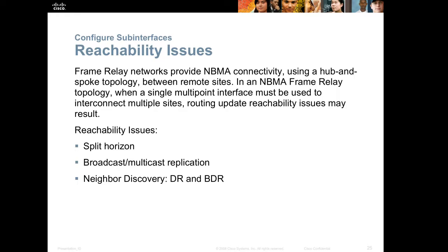Reachability issues: Frame Relay is a non-broadcast multiple access network, so by default Frame Relay does not forward broadcasts. Frame Relay predates multicast, so Frame Relay treats multicast the same as a broadcast — multicast traffic is also not permitted on a Frame Relay link by default. For this reason you can have reachability issues. For instance, routing tables typically use broadcasts or multicasts to be populated by routing protocols like RIP, EIGRP, and OSPF, so you would have to either modify Frame Relay to allow broadcasts or modify your routing protocol to use unicast to make it compatible with the Frame Relay network.